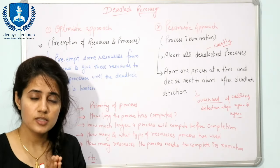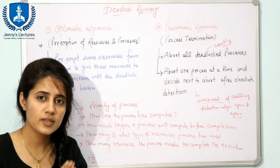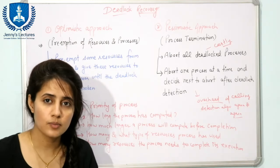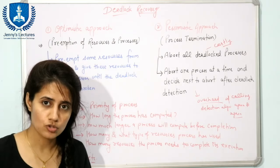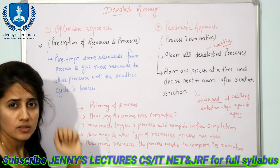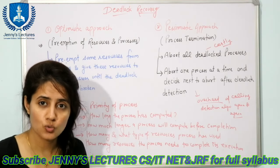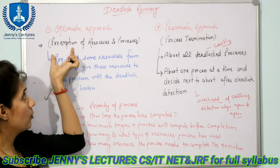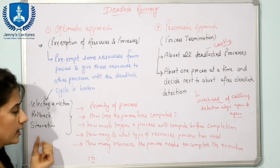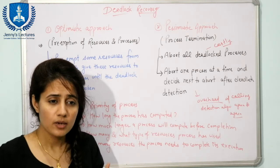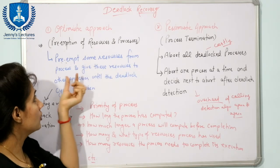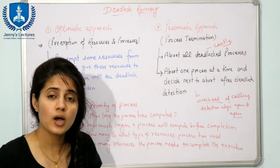The optimistic approach is preemption of resources and processes. In this case, some resources are forcefully preempted from one process and given to another so that the other process can complete its execution. When implementing this approach, the system must handle three problems: selecting a victim, rollback, and starvation. Selecting a victim means deciding which resource or which process is to be preempted.